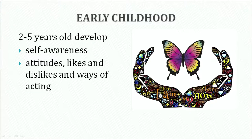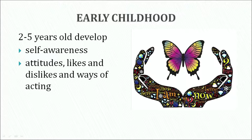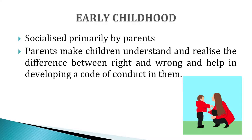In early childhood, children develop self-awareness by the age of 2 to 5 years. They develop attitudes, likes and dislikes, and ways of acting. Socialization is the process by which children acquire skills to become responsible adults in their society. Children are socialized primarily by the parents, who make children understand and realize the difference between right and wrong and help in developing a code of conduct in them. A strong identification process helps in socialization as children observe and imitate their parents, who become role models for their children.